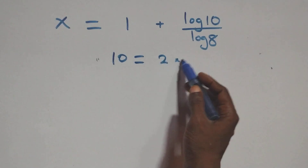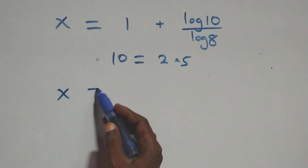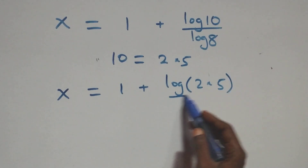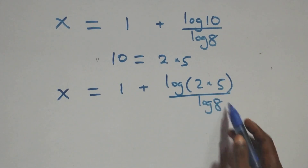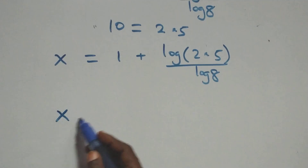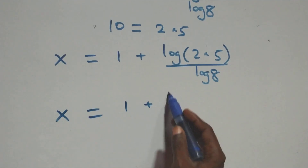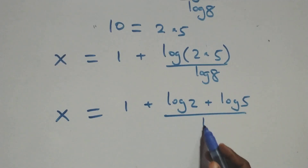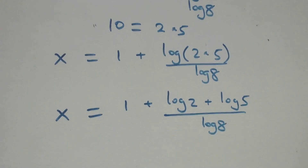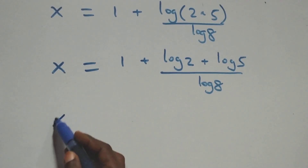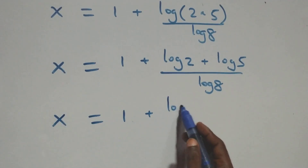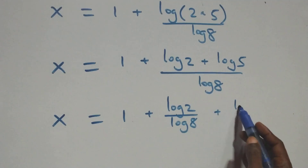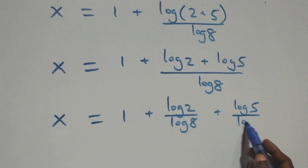10 can be expressed as 2 times 5, so we have x equals to 1 plus log(2 times 5) over log 8. This also follows the log product rule, giving x equals to 1 plus log 2 plus log 5 over log 8. Then we separate this into two fractions: x equals to 1 plus log 2 over log 8 plus log 5 over log 8.